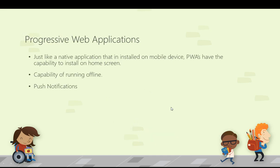Just like a native application installed on a mobile device, PWAs have the capability to install on the home screen, run offline, and send and receive push notifications. The application initially runs on the browser, and then can also be installed on the home screen of a mobile device, so the user gets the same look, feel, and user experience as a native app.